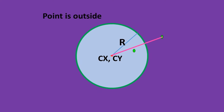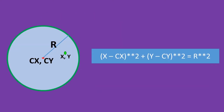Again, here the line drawn from the center of the circle coordinates Cx and Cy to the green color point is visibly greater than the radius R of the circle, which means the corresponding point is outside the circle of radius R.